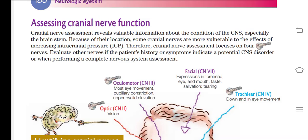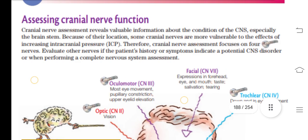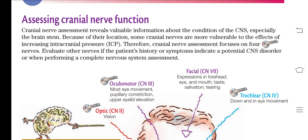Assalamualaikum everyone. In the first part of the Nerve System, we learned to do mental status. The second step is to do cranial nerves. In this video, we will discuss the assessment of cranial nerves function. The nerves that originate from the brain are called cranial nerves, and there are 12 pairs in total. The assessment of cranial nerves provides valuable information for the central nervous system, especially the brain stem.